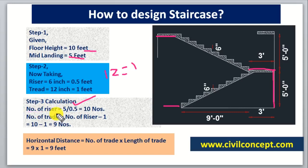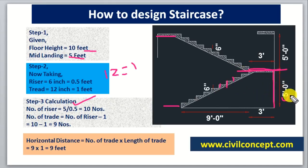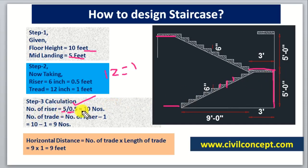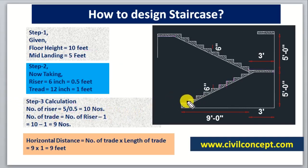In Step 3, the calculation: first we find the number of risers. The mid-height is 5 feet. If we divide 5 feet by one riser height, it gives us the total number of risers. Number of risers = 5 feet ÷ 0.5 feet = 10. So we get 10 risers — count: 1, 2, 3, 4, 5, 6, 7, 8, 9, 10.